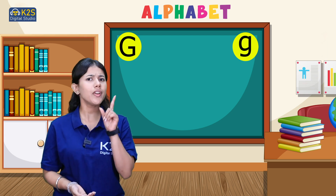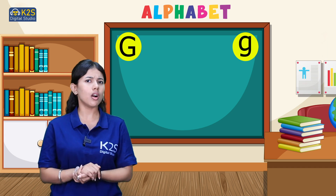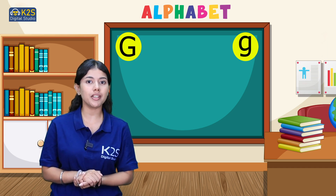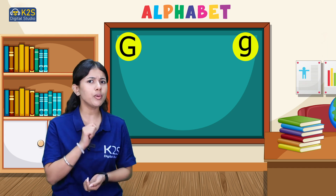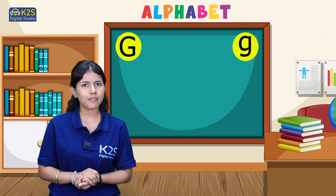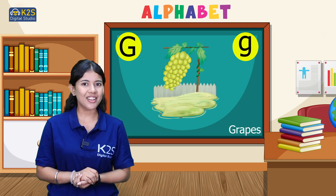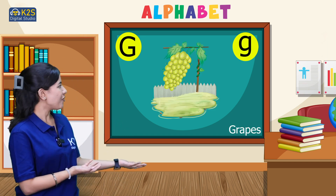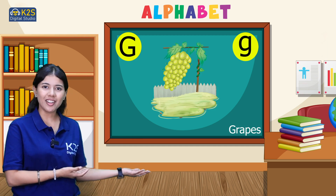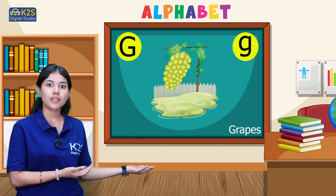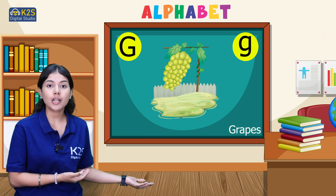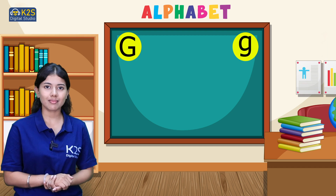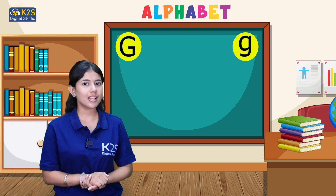The very first word is a fruit which starts with letter G. Can you guess? Grapes! Correct. G for grapes. Grapes start with letter G.